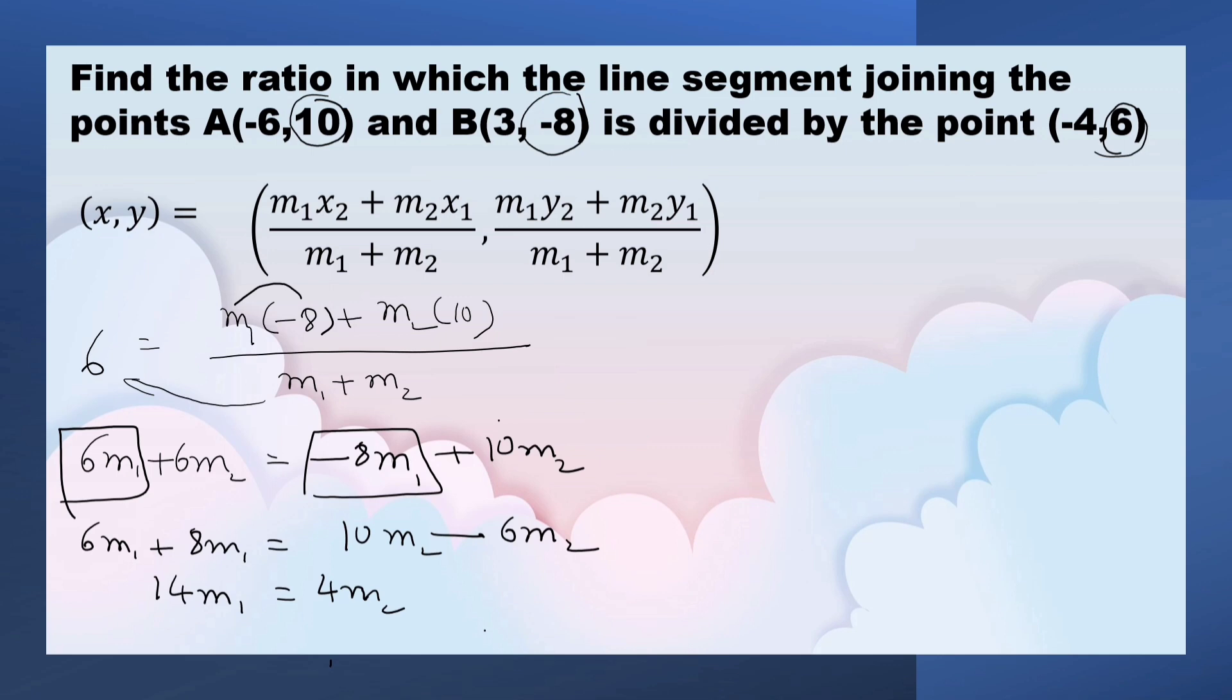Now, we have to find the value M1 upon M2. This is 4 upon, transpose 14 to this side, 14. Here, 2's are, here, 7's are, 2 by 7. So, the point negative of 4, 6 divides the line segment internally in the ratio 2 is to 7.